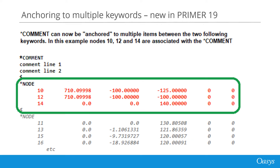Now we come to multiple anchoring, which is a new option in Primer 19, not the default. If it's turned on, then a comment is not just associated with the single following keyword — so in this example that would be node 10 — but it's associated with the block of keywords from that keyword header up to the next one. So in this example that's nodes 10, 12, and 14.